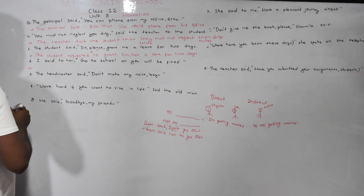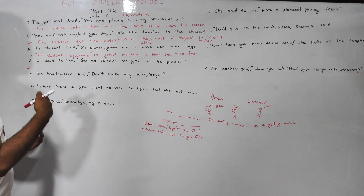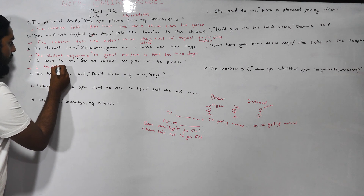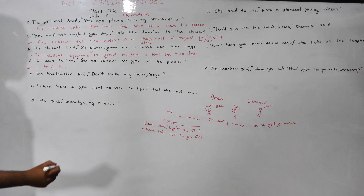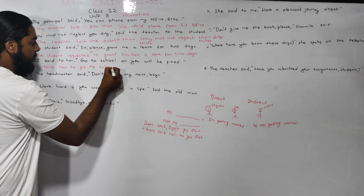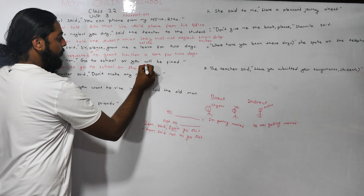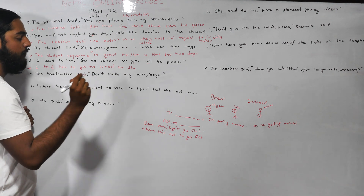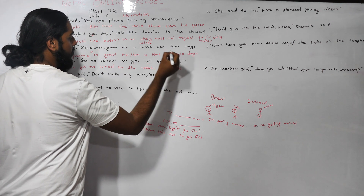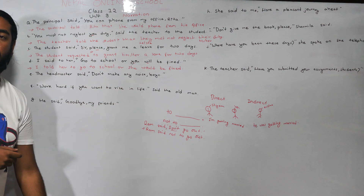Example D: 'Go to school or you will be fine.' I told her to go to school. For modal verbs, 'will' changes to 'would', 'can' to 'could', 'may' to 'might'. So: I told her to go to school or she would be fine.